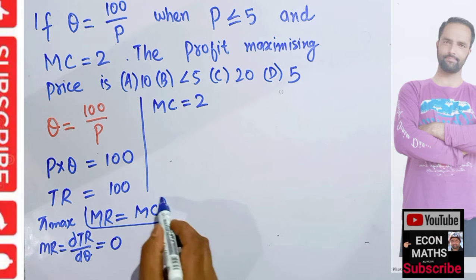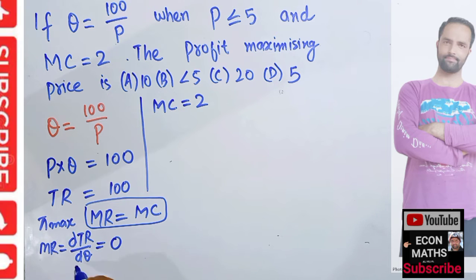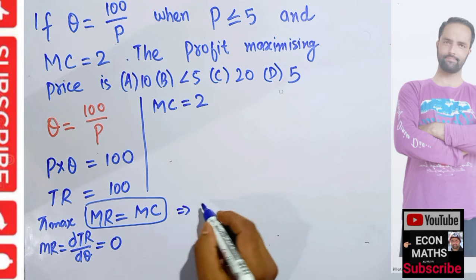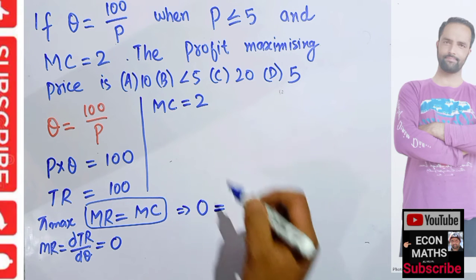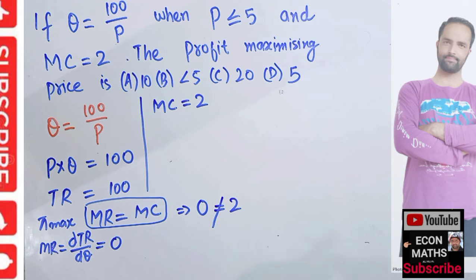Applying the condition MR equals MC, our marginal revenue is zero, which would imply zero equals marginal cost equals 2. This is not possible, so we cannot use this standard profit-maximization method to solve this question. We need another logic here.